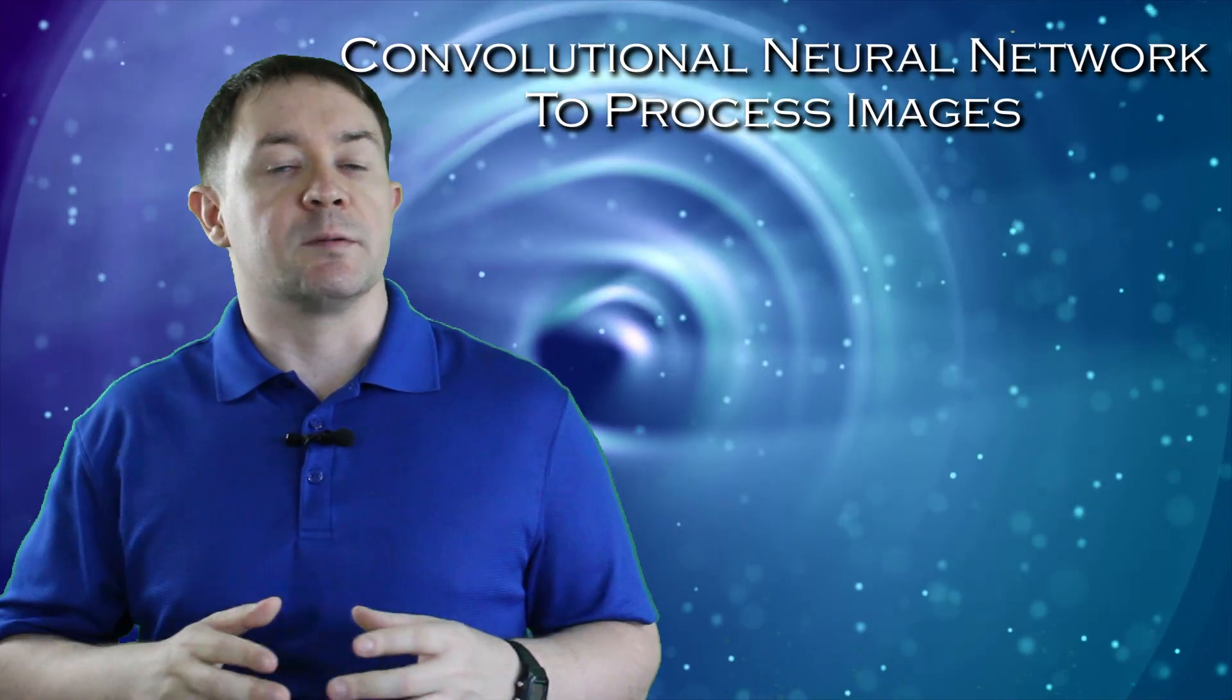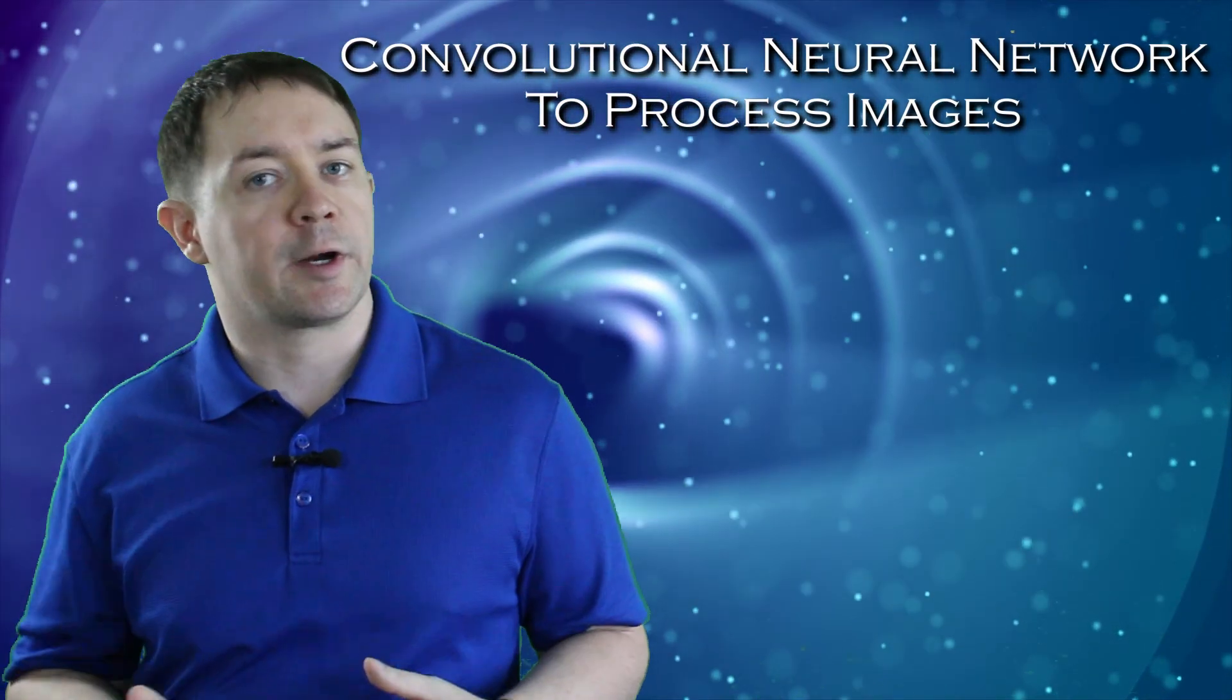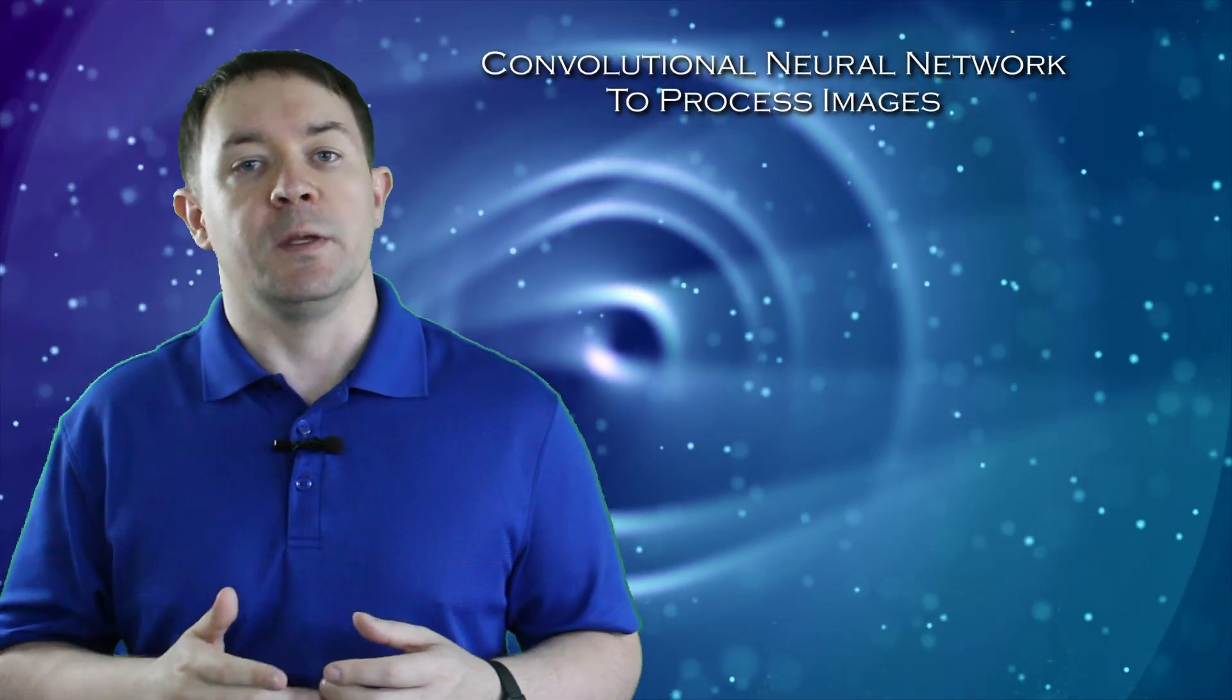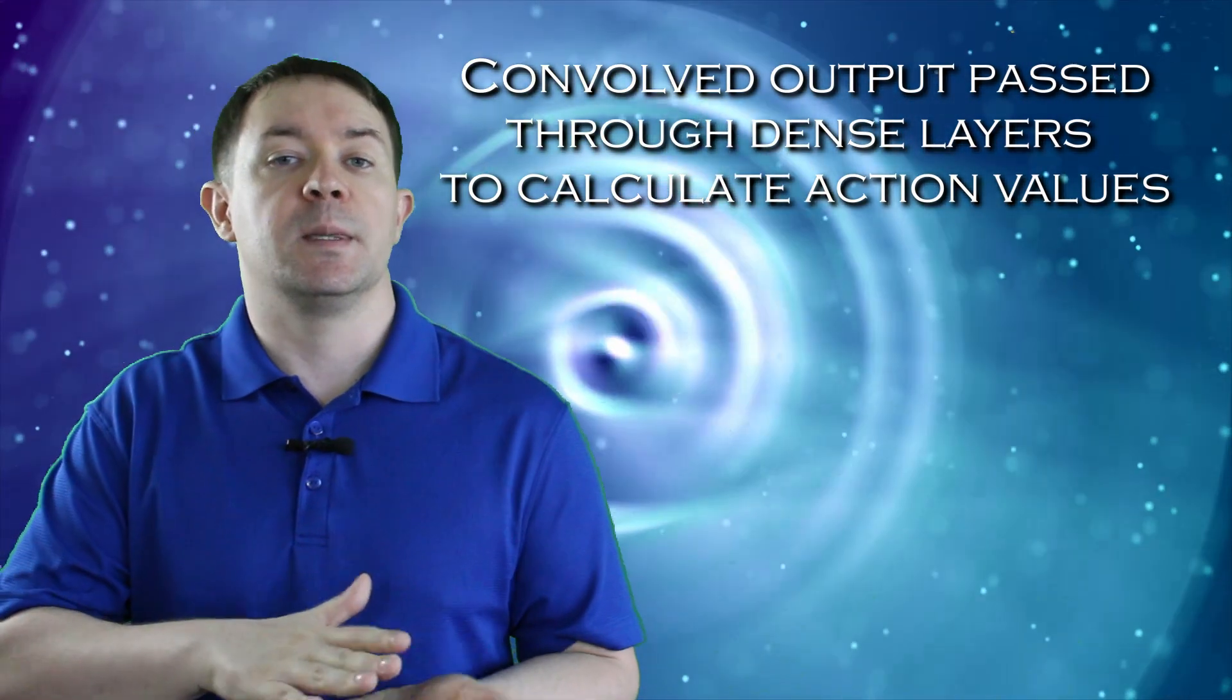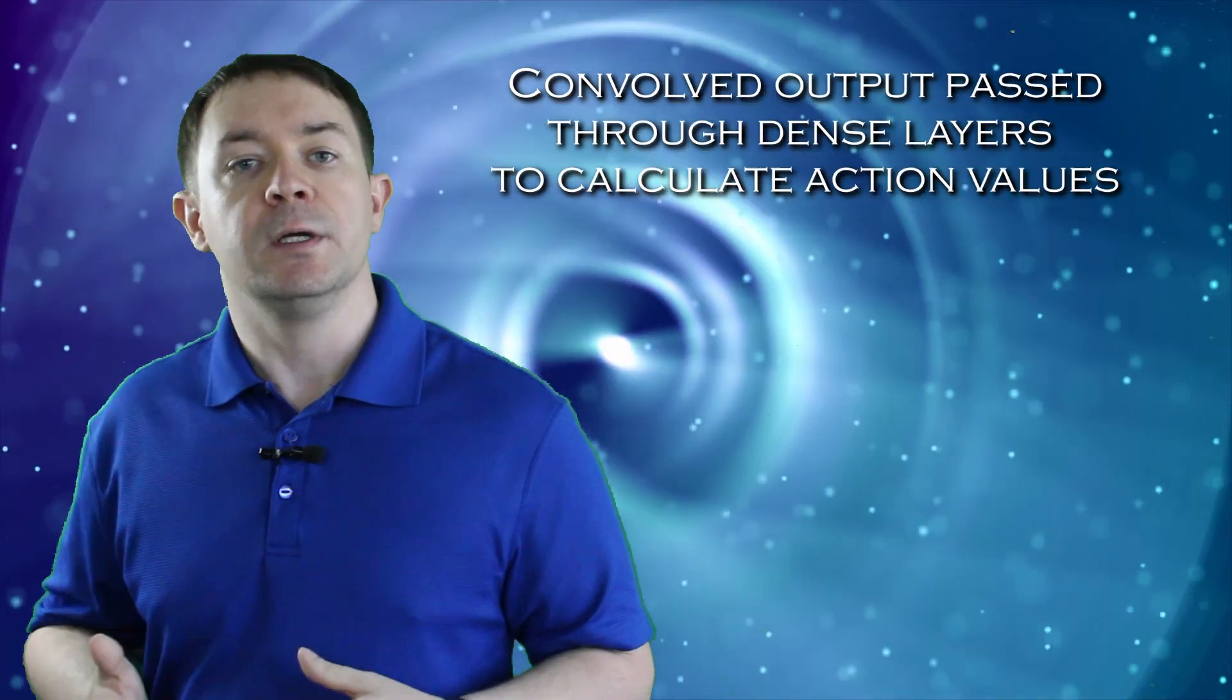If you're dealing with an environment that gives pixel images, just like in the Atari library from the OpenAI Gym, then you will need to use a convolutional neural network to perform feature extraction on the images. The output from the convolutional network is flattened and then fed into a dense neural network to approximate the values of each action for your agent.